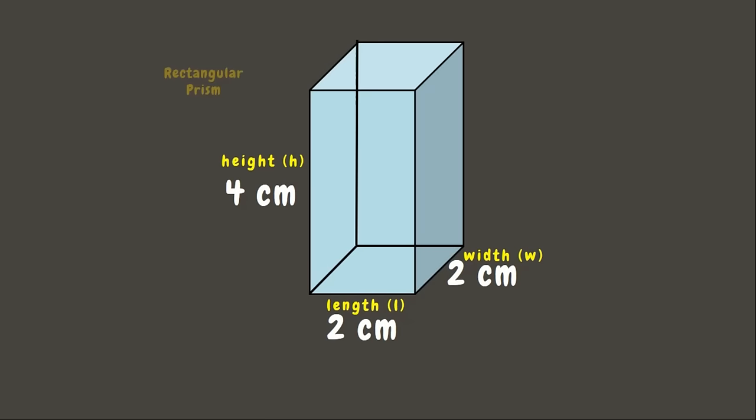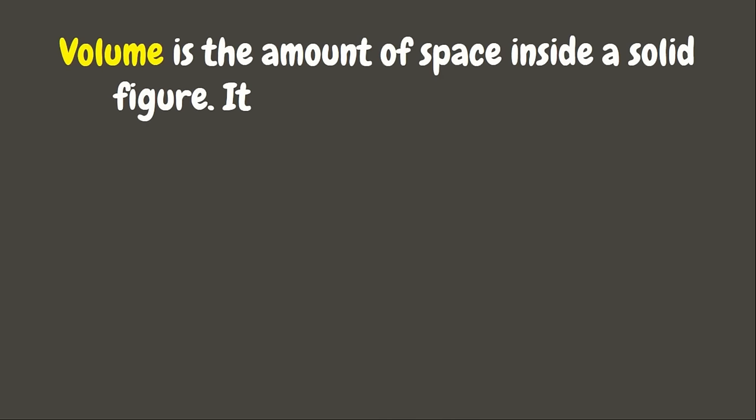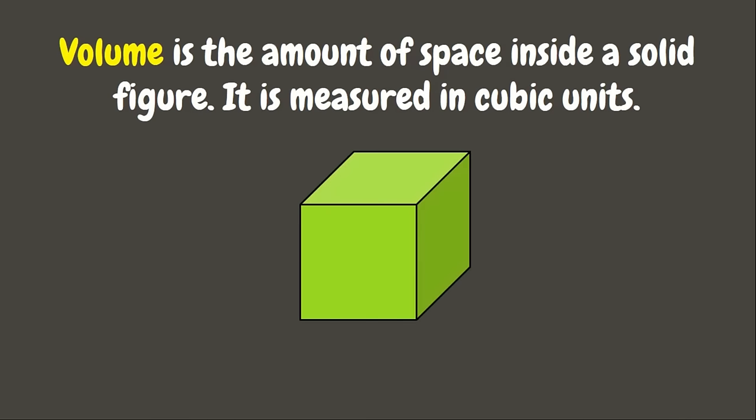We have here a tank in the form of a rectangular prism. Its height measures 4 centimeters, length 2 centimeters, and width 2 centimeters. Now let's solve for its volume. But wait, do you know what volume means? Volume is the amount of space inside a solid figure or three-dimensional figure. Unlike area which is measured in square units, volume is measured in cubic units.